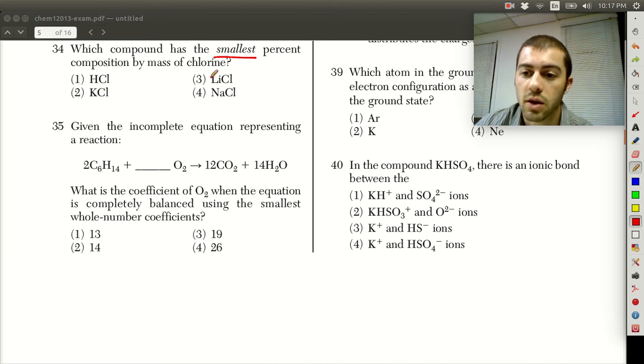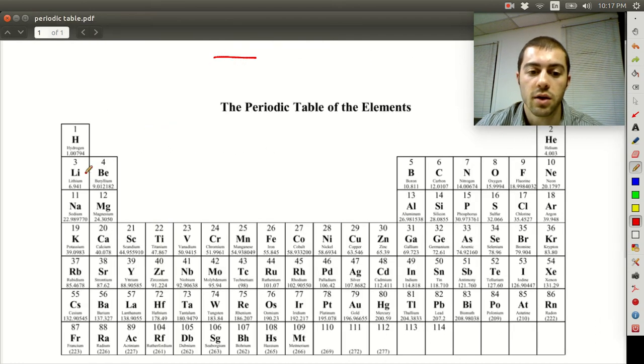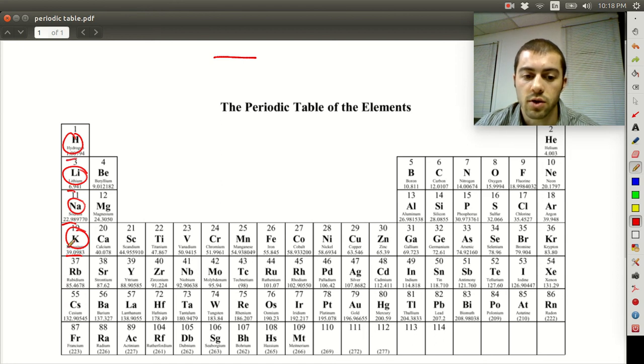So whichever one of these has the heaviest or the highest amount of other substance or other element besides chlorine is going to give chlorine the smallest percent composition by mass. If we look at our periodic table, we have lithium, sodium, hydrogen, and potassium. Potassium has a mass of 39, 23 for sodium, 7 for lithium, and 1 for hydrogen. Potassium is obviously the heaviest element here.